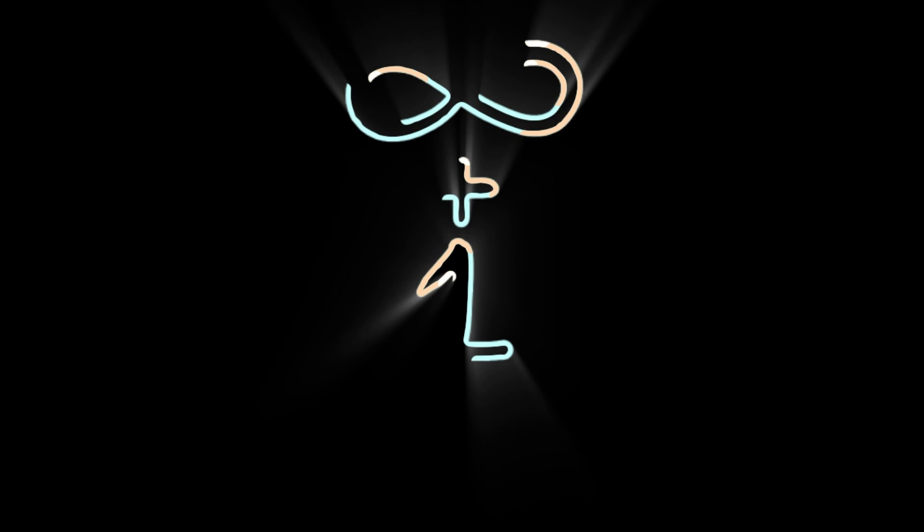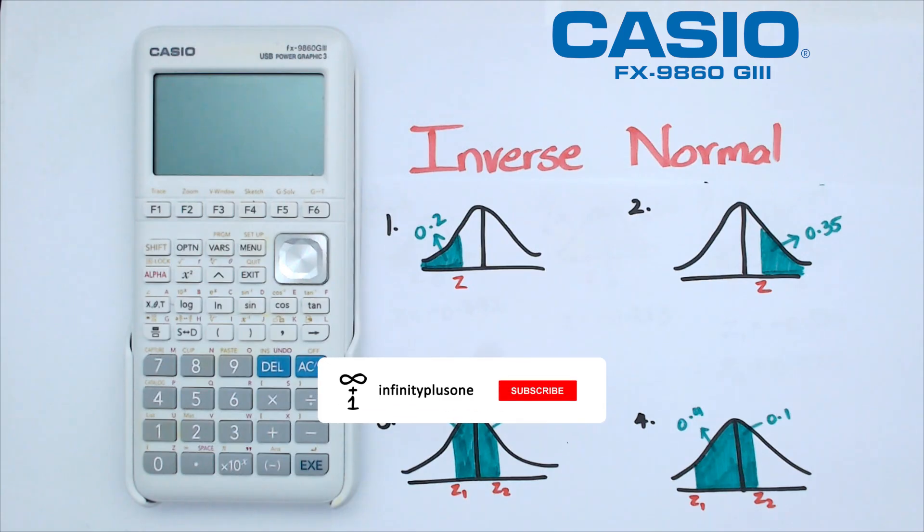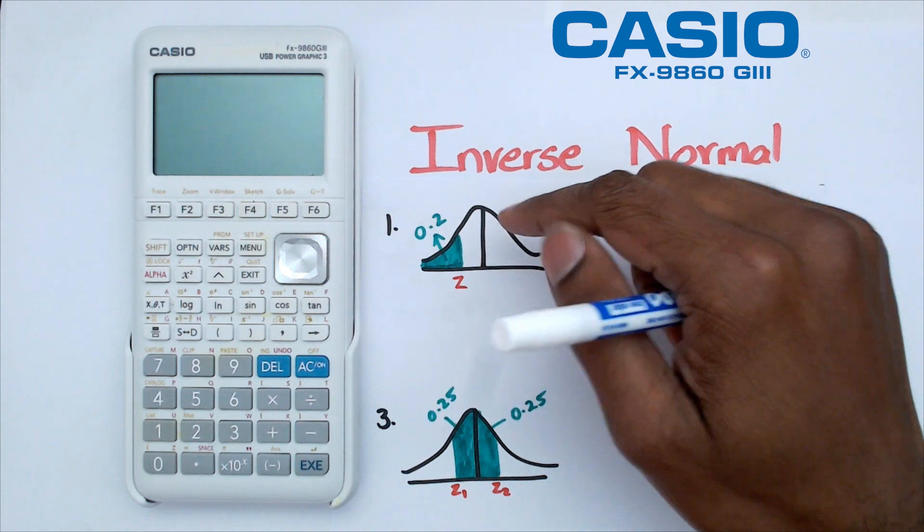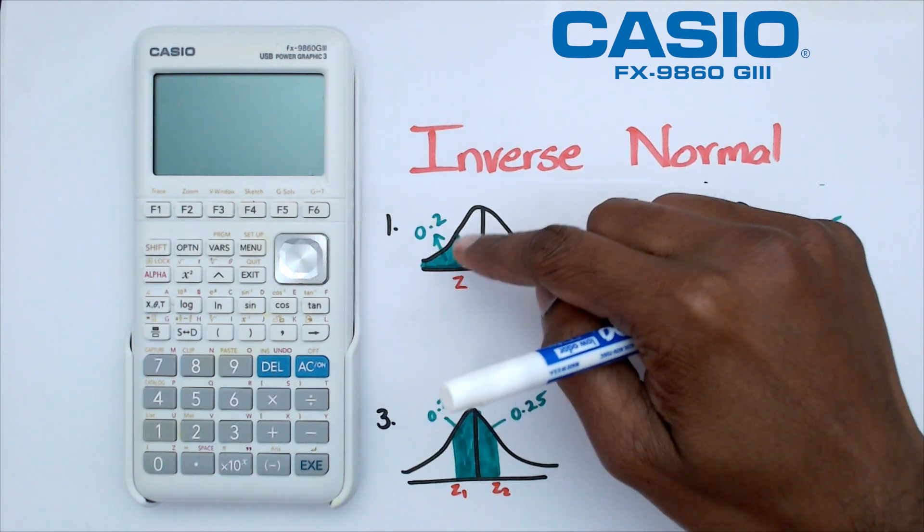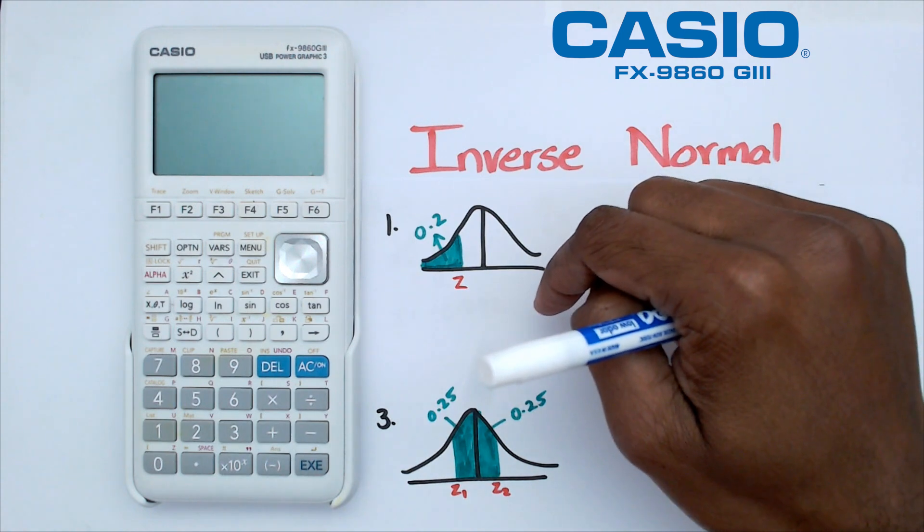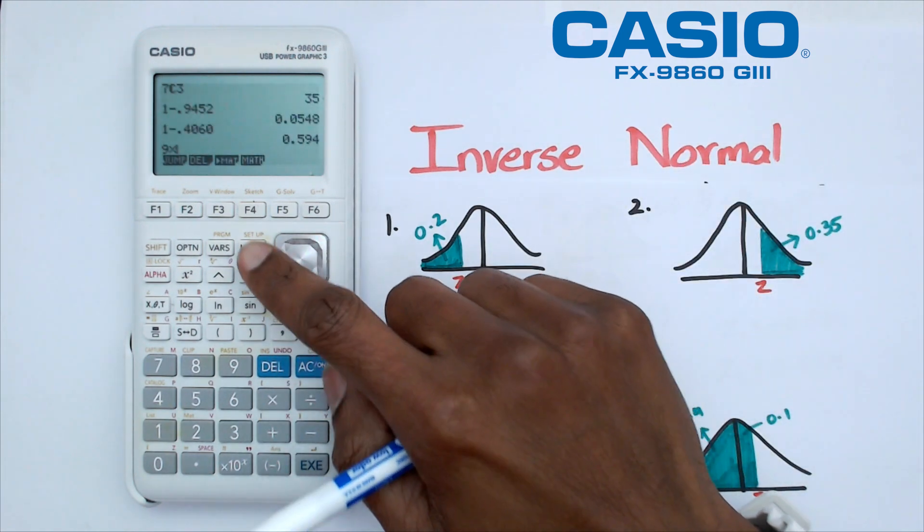Alright, so the first thing we want to be looking at is question one. What we've got here is 0.2 as the left tail of this probability curve. So what we're going to do is switch on the calculator and click on menu.